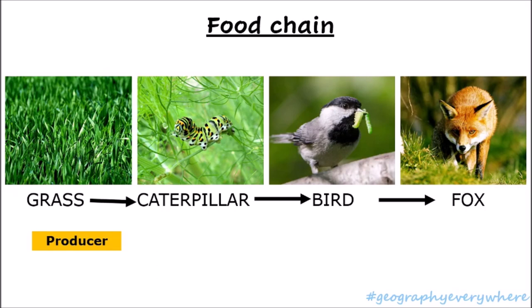The caterpillar eats the grass. As you can see, the arrow is pointing in the direction where the energy is moving. Because the caterpillar is eating the grass, it's taking energy from the grass. Since the caterpillar feeds on the grass, it is called a primary consumer — he's the first consumer.